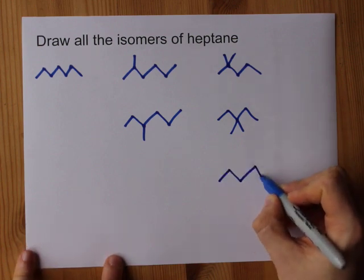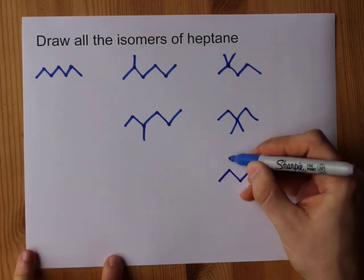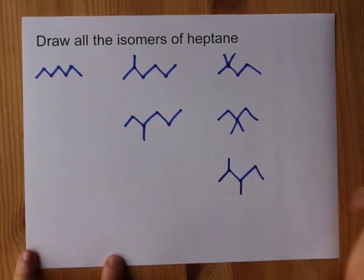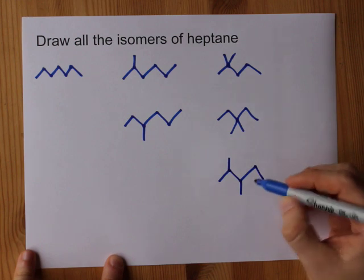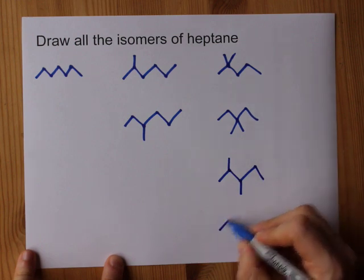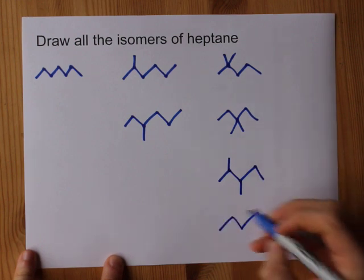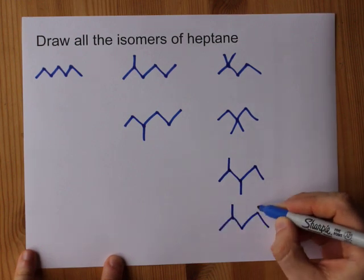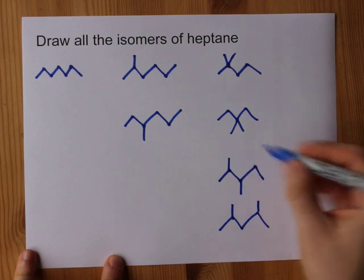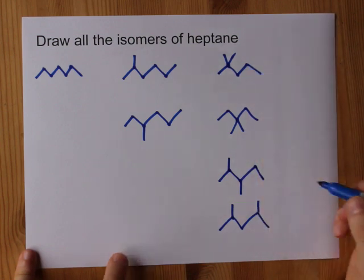I could split them up — put 1 on carbon 2 and 1 on carbon 3. Or I could put 1 on carbon 2 and 1 on carbon 4. That's not the same as any of those.